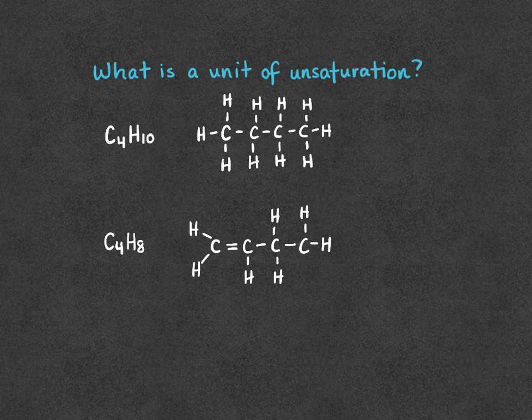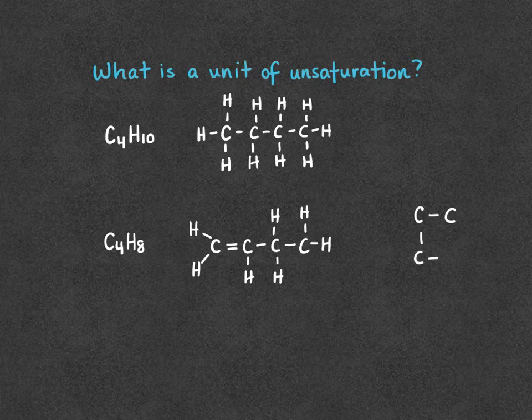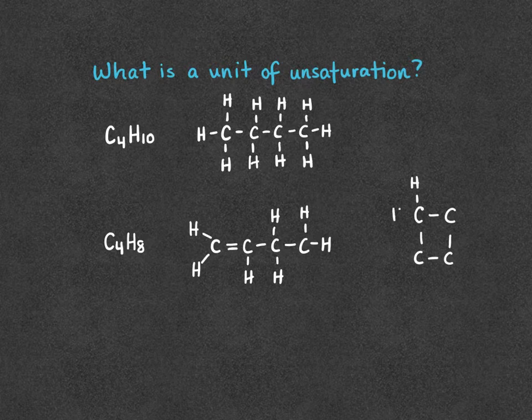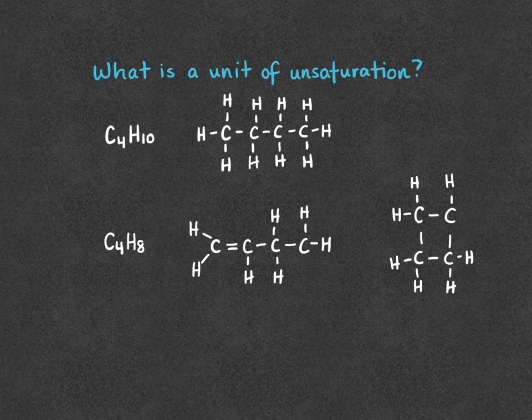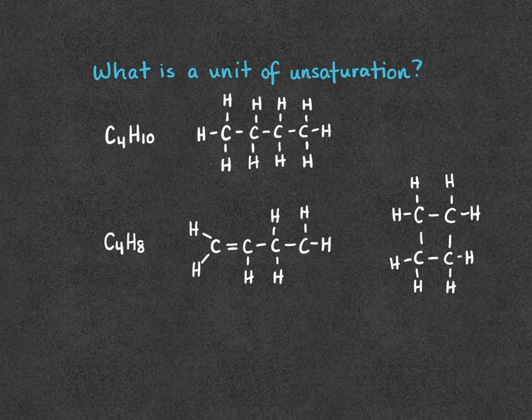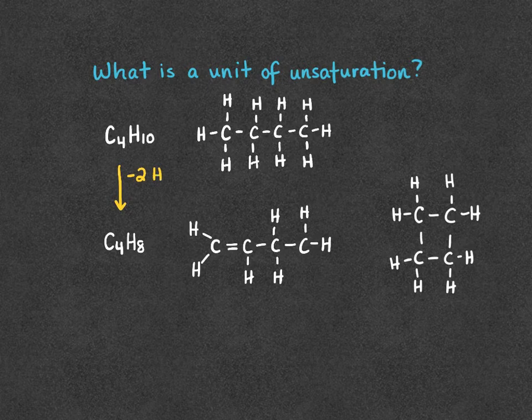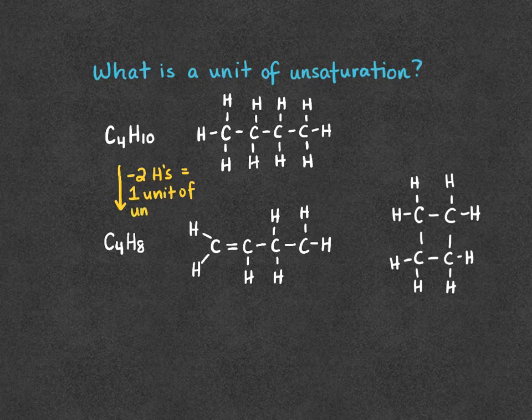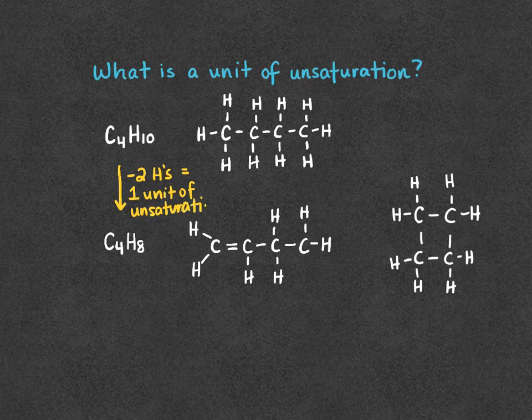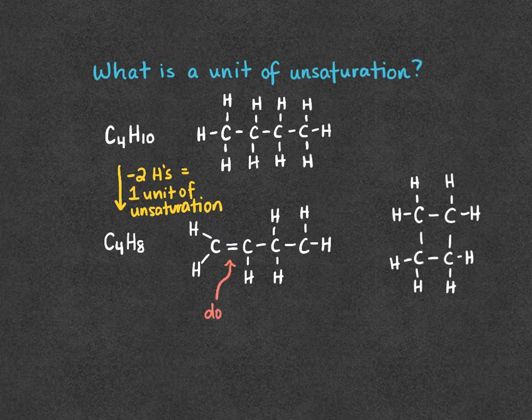We can also draw this as a ring structure. In a ring, we no longer have one of those loose carbons on the end, and so no carbons in a ring structure will have three hydrogens. So a unit of unsaturation is anything that removes two hydrogens from a straight chain alkane. From these examples, we can see that two ways to do that are to introduce a double bond or a ring.